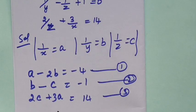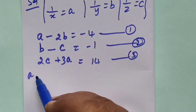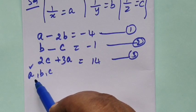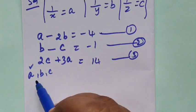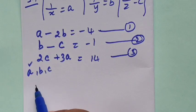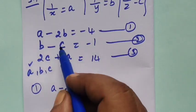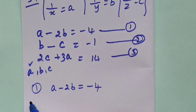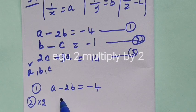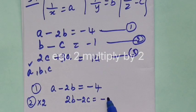This is equation 3. Now, we can cancel either a or b or c. Equation 2, you are multiplying by 2, so 2b minus 2c equal to minus 2 throughout.